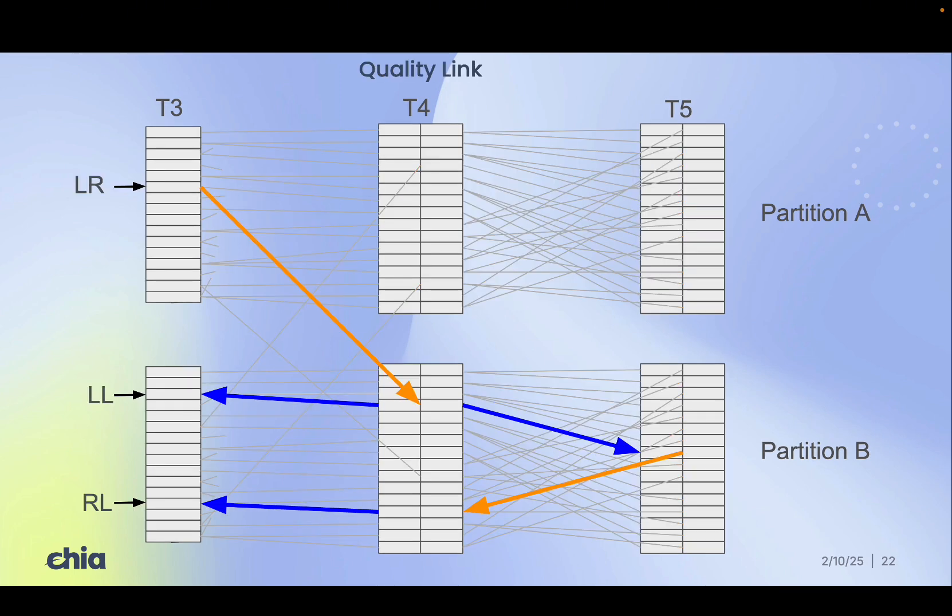From the proof fragment, we trace upward to its parent in T5 and then down to sibling nodes in partition B. Between these two partitions, we always form a group of three linked proof fragments. This group is called a quality link.